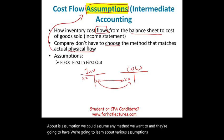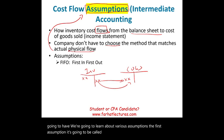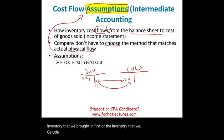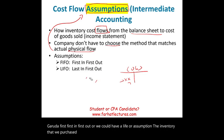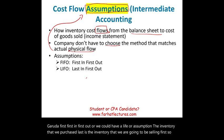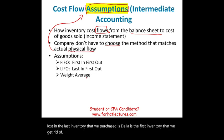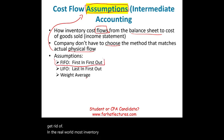The first assumption is FIFO, or first in, first out. We assume the inventory brought in first is the inventory we get rid of first. Or we could use LIFO — the inventory purchased last is the inventory sold first, so last in, first out. In the real world, most inventory is FIFO.